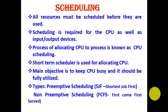In the last tutorials I mentioned that all resources must be scheduled before they are used, and there are different resources in our system such as CPU and input-output devices. When you try to schedule the CPU, the work is done by the CPU scheduler, and the process of allocating CPU to a process is known as CPU scheduling. The short-term scheduler is another name for the CPU scheduler. The main reason the CPU is to be scheduled is so that it could be fully utilized and the CPU will be busy.